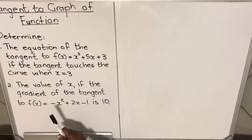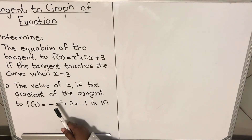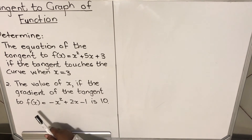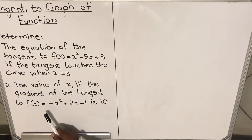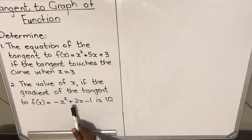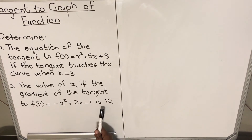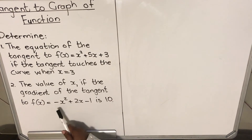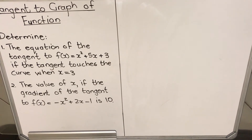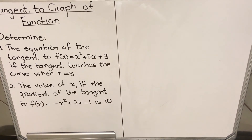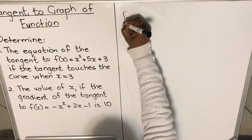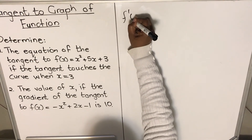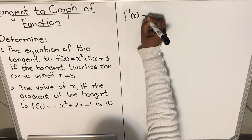Let's look at the second question. It says: determine the value of x if the gradient of the tangent to f, where f(x) equals minus x squared plus 2x minus 1, is 10. They've given you the gradient — it's 10 — and they've given you the function. You need to calculate the value of x.